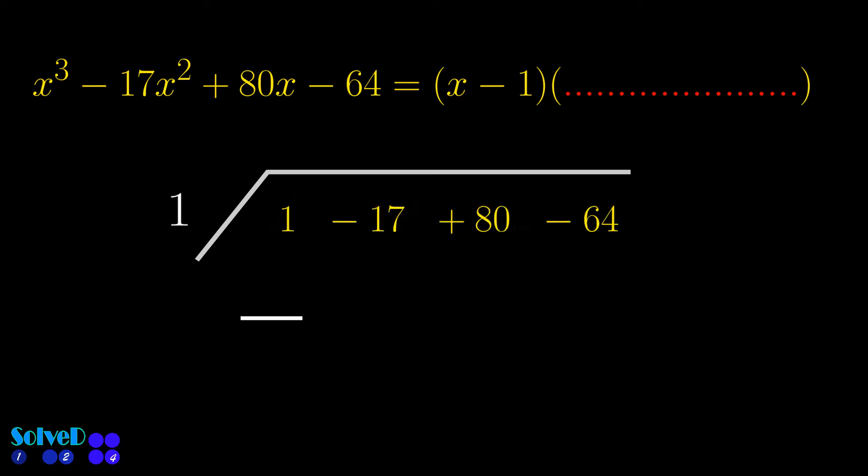Note, we considered plus 1 from x minus 1. The first coefficient of the function, which is 1, bring this down. Then multiply this with 1 and write here. Now add these.